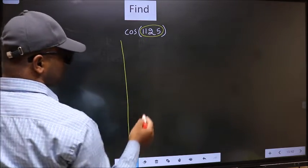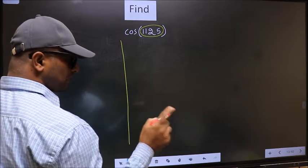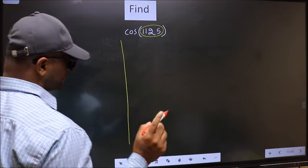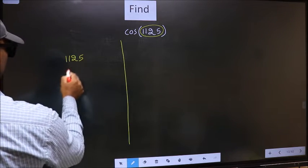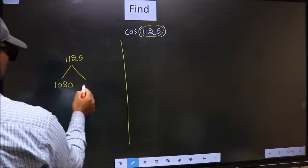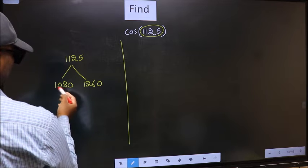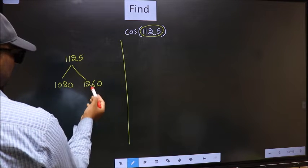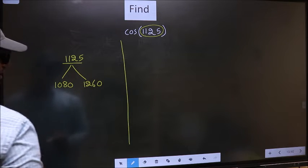Now you should check 1125 lies between which two multiples of 180. What I mean is, 1125 lies between 1080 and 1260. This is 180×6 and this is 180×7. Between these two numbers, 1125 lies.